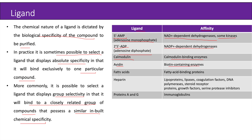Fatty acids have affinity for fatty acid binding proteins. Heparin has affinity for lipoproteins, lipases, coagulation factors, DNA polymerase, steroid receptor proteins, growth factors, and serine protease inhibitors. Protein A and G have affinity for immunoglobins.